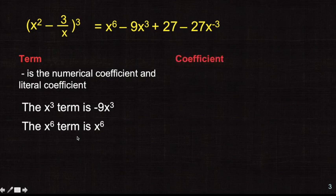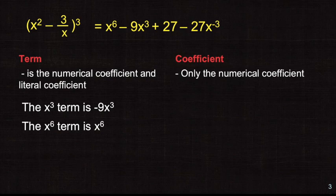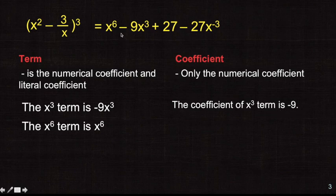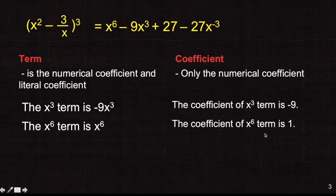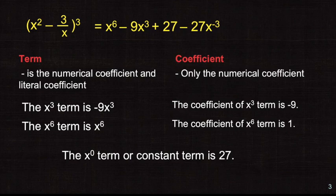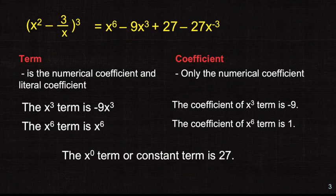The coefficient is just the numerical coefficient — only the number. For example, the coefficient of x cubed is negative 9. Be mindful of the sign; if there's a minus, it is included in the coefficient. The coefficient of x to the power of 6 is 1. The x to the power of 0 term — what we call the constant term — is 27, because x to the power of 0 is just 1, so we don't write it. The constant term is 27, the term without the literal coefficient.